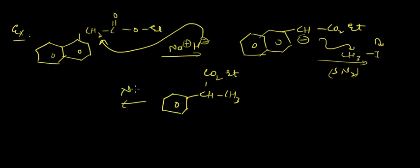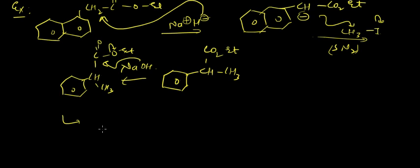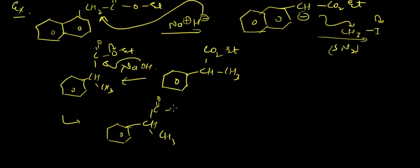Next, on this compound if we pass NaOH (OH⁻), the OH⁻ attacks CO2Et, and OEt is removed from the compound as OEt⁻. We get the carboxylate. In basic medium, O⁻ (carboxylate) is formed, giving us CH-CH3 with C(=O)O⁻, and EtO⁻ is released.